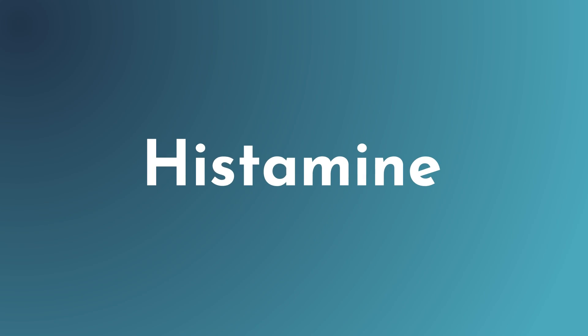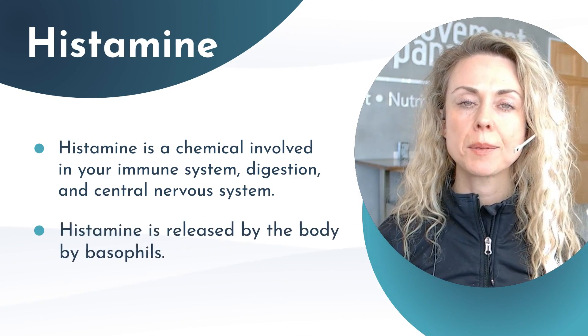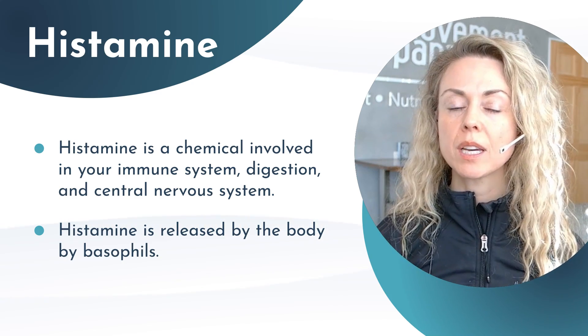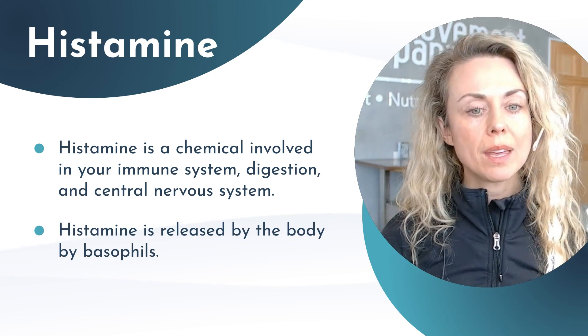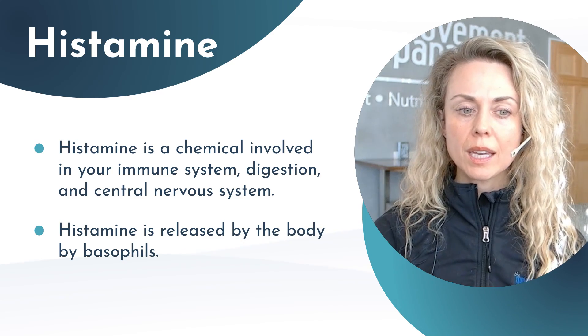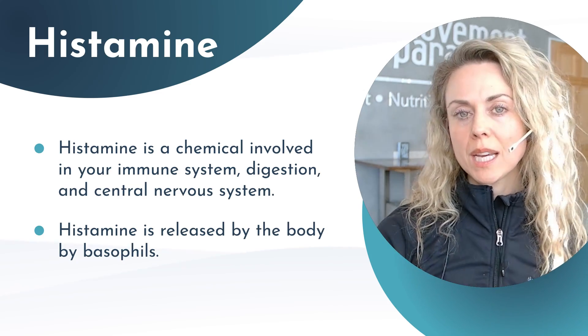So what is histamine? Essentially it's a chemical involved in our immune system, digestive system, and central nervous system. Histamine is released by the body via basophils — white blood cells composed of granulocytes — which are found within the mast cell. Both mast cells and basophils lie near connective tissue, where histamine is released in response to a potential foreign invader. This release makes it easier for white blood cells to pass through tiny capillaries to target and attack foreign invaders as part of our immune response.